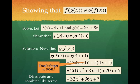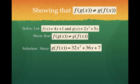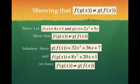Now I distribute my 2 and combine my like terms, and I get 32x squared plus 36x plus 7.